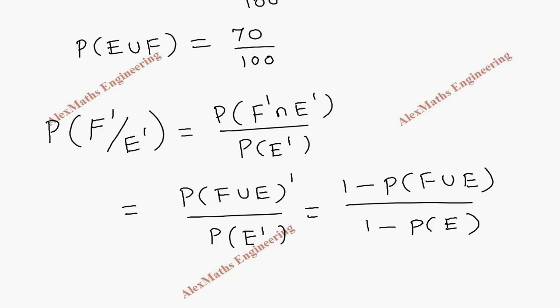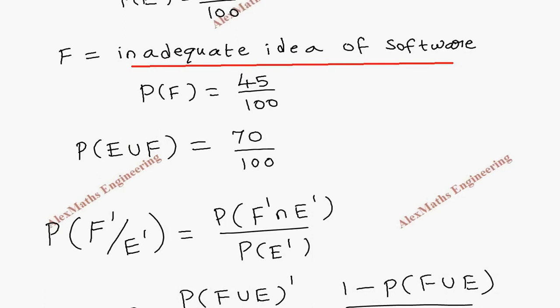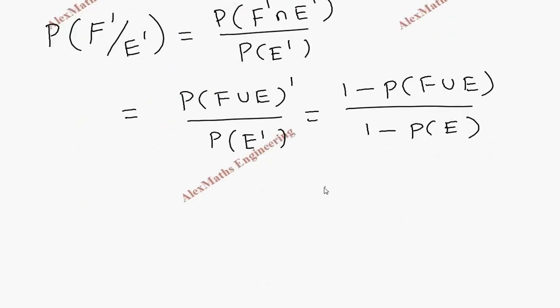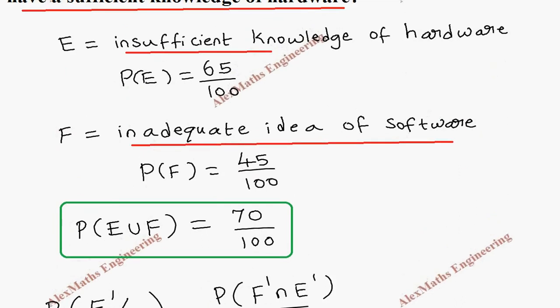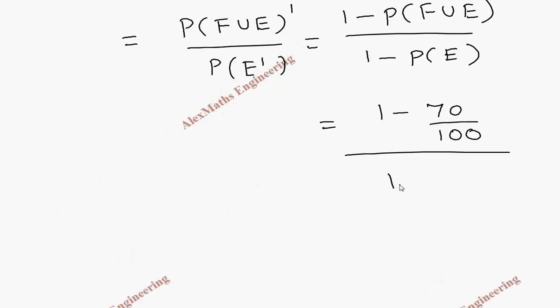Already we have written the value of P(E union F). E union F or F union E both are same. So here we can substitute 1 minus 70 by 100. And P(E), already we have written 65 by 100. So now it is 1 minus 65 by 100.